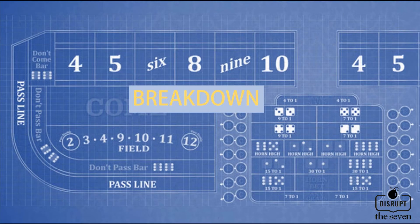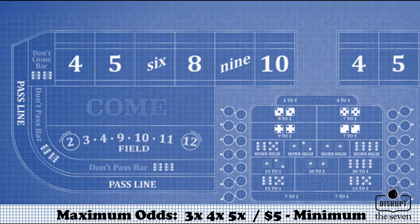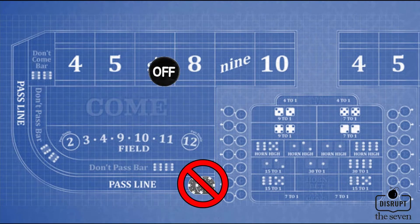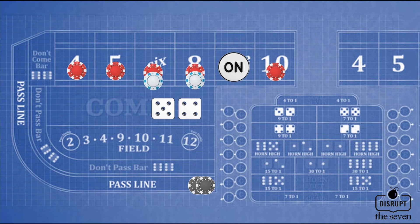Welcome to the segment, The Breakdown, where I take a moment to break down the strategy in play. The Hit and Run — in short, this strategy turns on and off your bets while avoiding the 7. We assume the basics: we're at a 3-4-5 maximum odds, $5 minimum table. We don't bet anything on the come out roll — no pass line bets, no don't pass line bets. Just let the shooter get that point. Let's say the shooter rolls a 9. We'll tell the dealer $27 across.